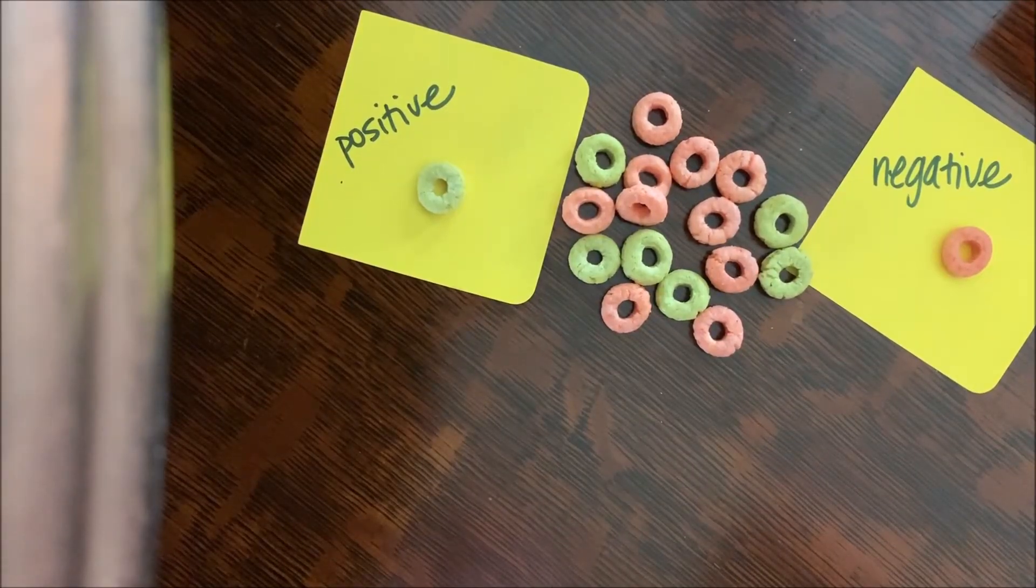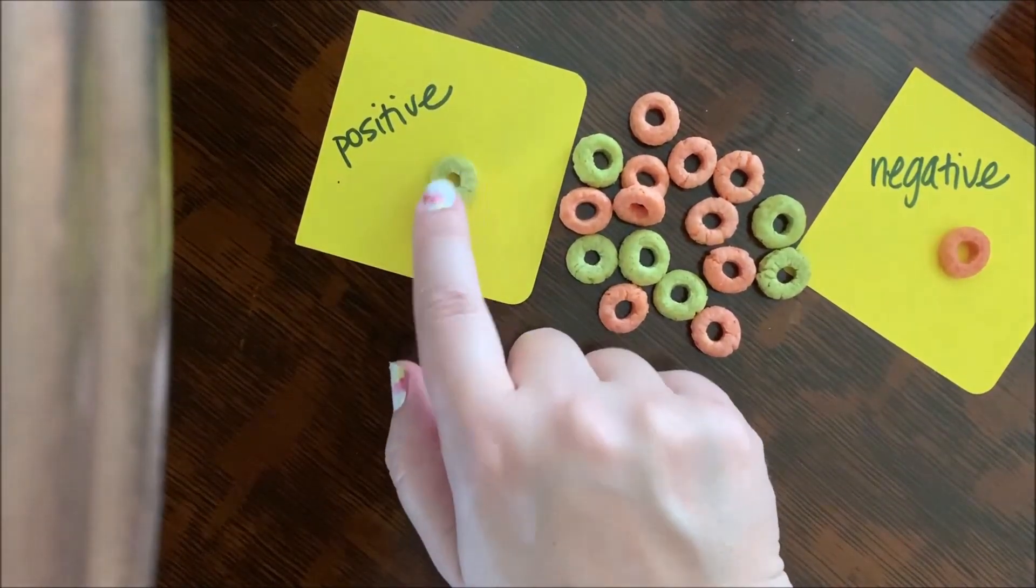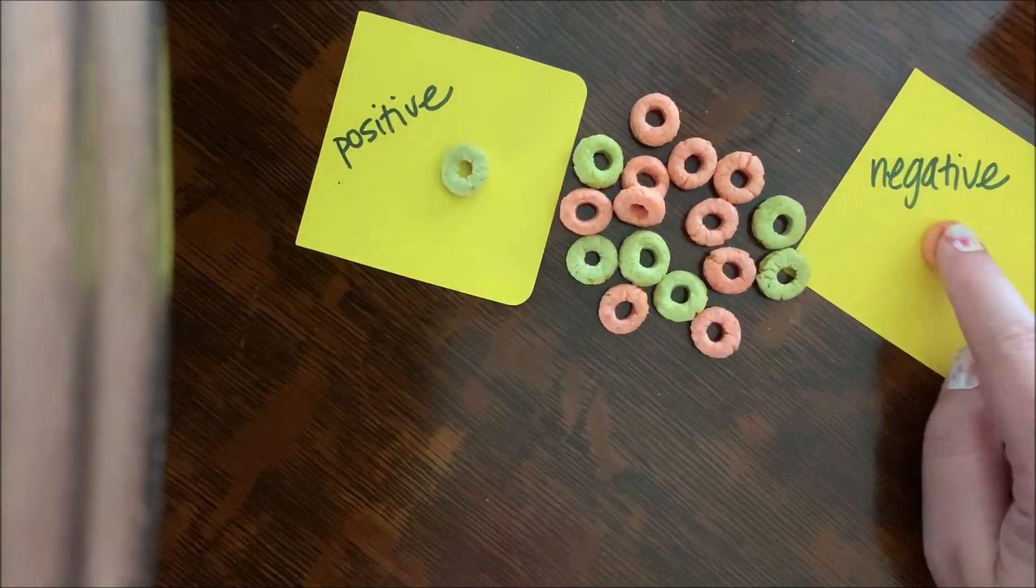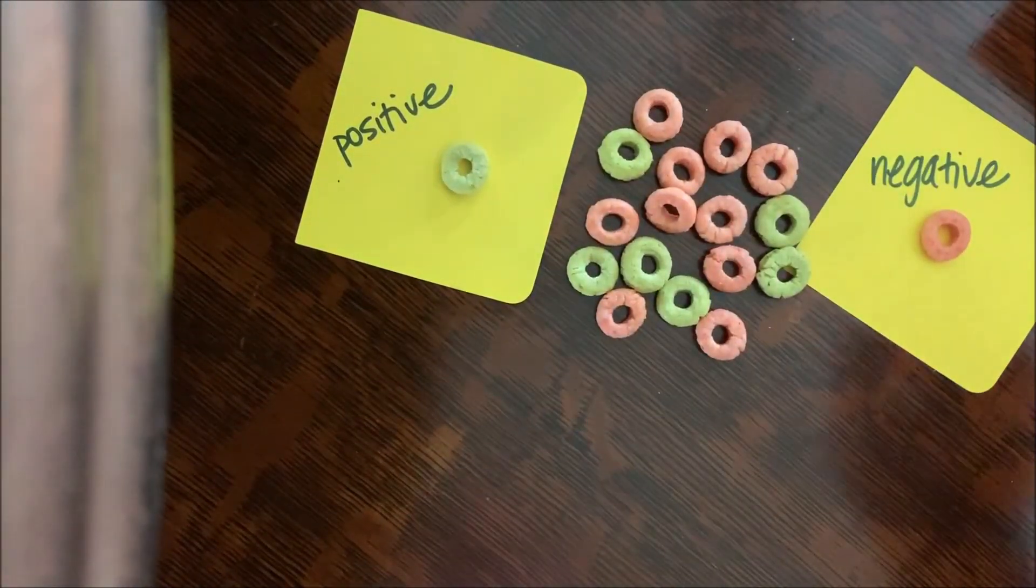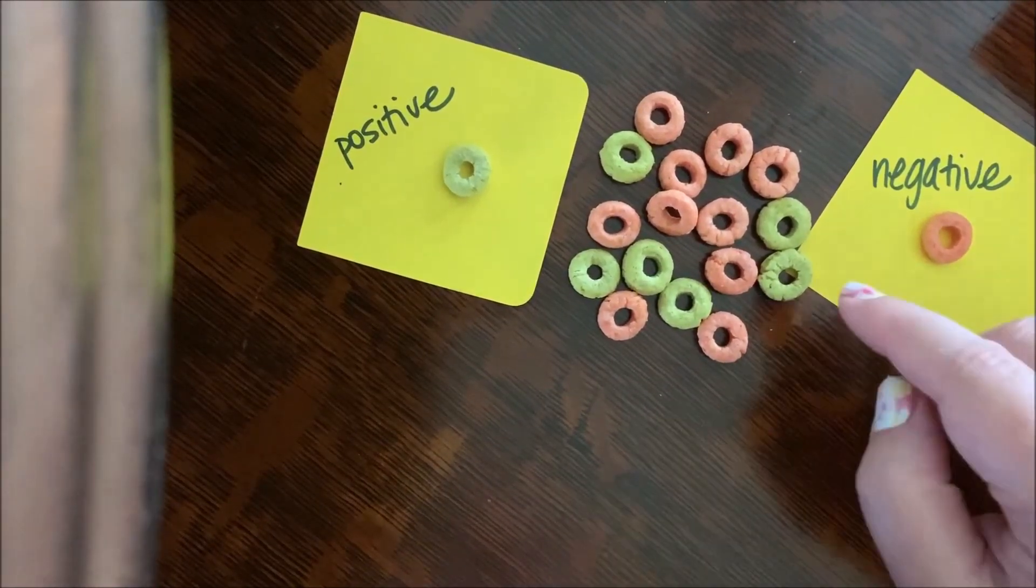Okay, let's try with some red and green cereal. Green is going to be my positive, red is going to be my negative, and here I've got my red and green cereals. And let's find some zero pairs.